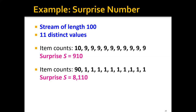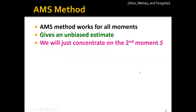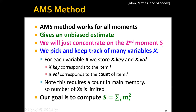This is why we want to estimate moments in a data stream efficiently. To do so, we can use the AMS method. The nice thing about the AMS method is that it works for all moments — the first, second, third moment, etc. — and it also gives an unbiased estimate. In this part of the lecture, we'll first focus on the second moment, which is the surprise number S.